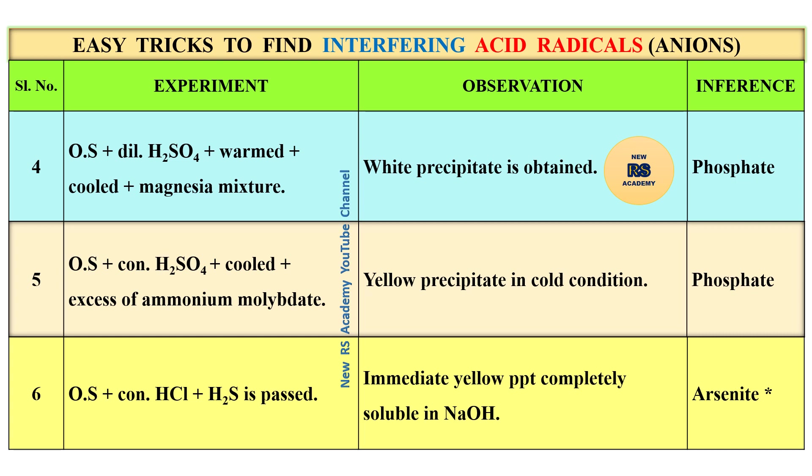These are the tests for interfering acid radicals. For simple acid radicals there are 9 tests, and for interfering acid radicals there are 6 tests.